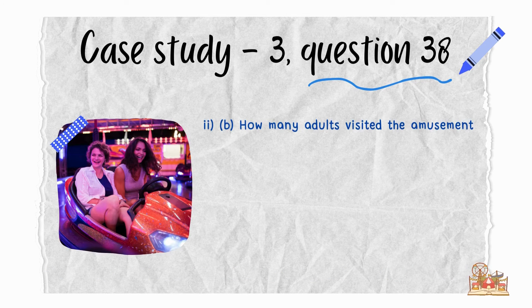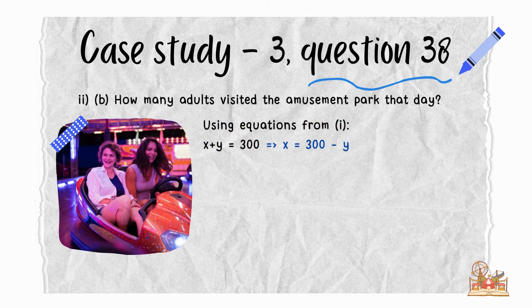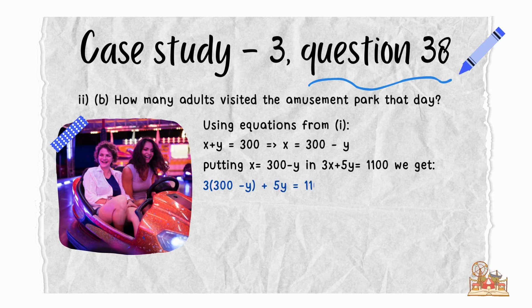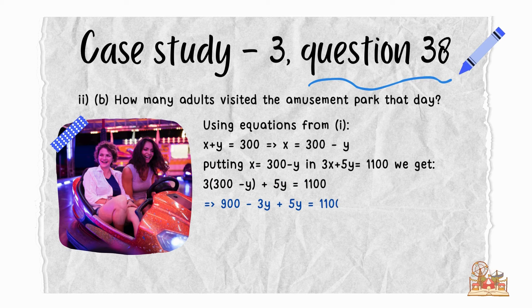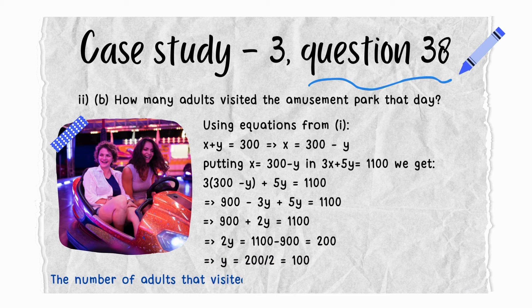How many adults visited the amusement park that day? Using the same equation x + y = 300, we get x = 300 − y. Substituting into 3x + 5y = 1100: 3(300 − y) + 5y = 1100. Solving this, we get y = 100. So the number of adults that visited the amusement park that day was 100.